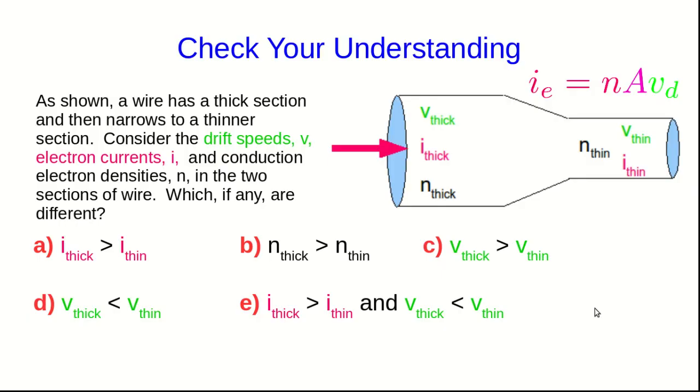Well, let's check your understanding again. So here we have a wire with a thick section and a thin section and current running through it. And we're going to compare the drift speeds, V thick and V thin, the electron currents, I thick and I thin, and the electron densities, N thick and N thin. And you probably have a sense that there's some difference between them in the two sections of wire. So which quantities are different?